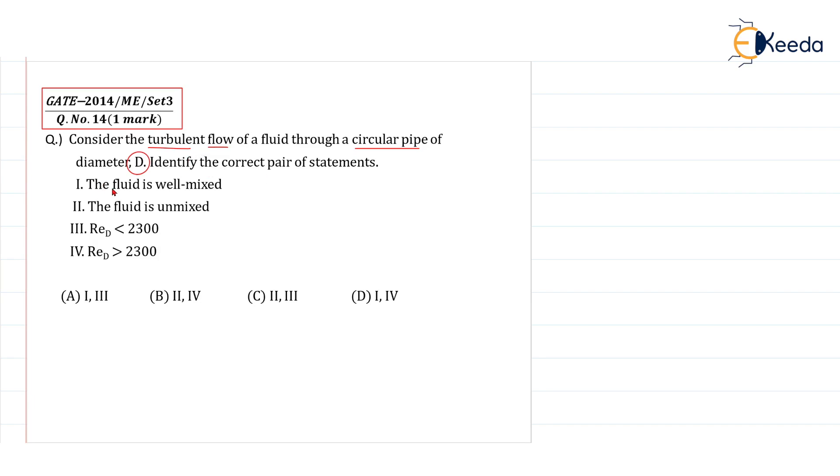The fluid is well mixed, the fluid is unmixed, Reynolds number is less than 2300, Reynolds number greater than 2300.